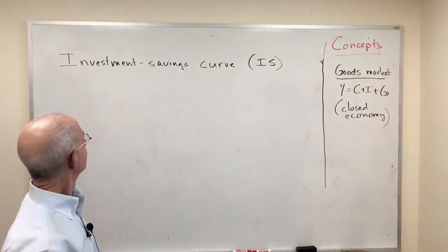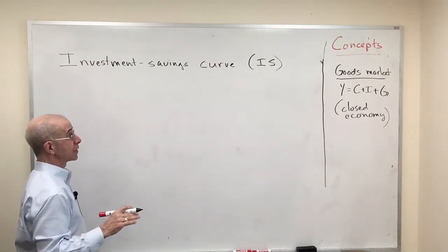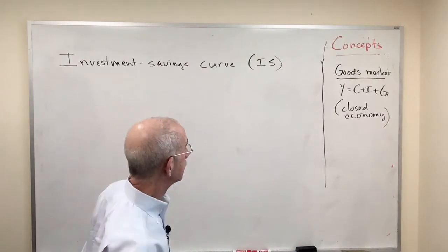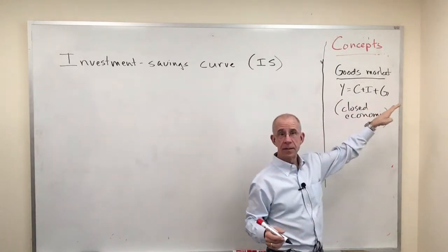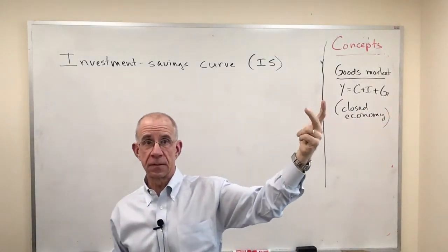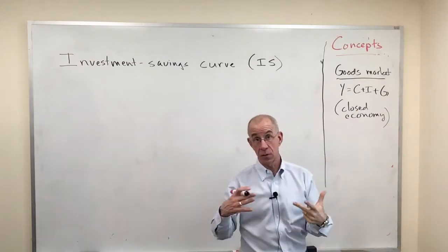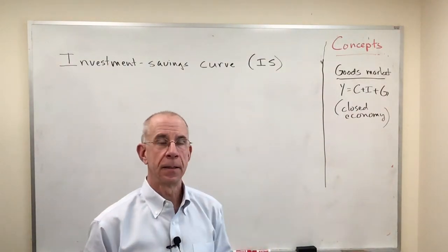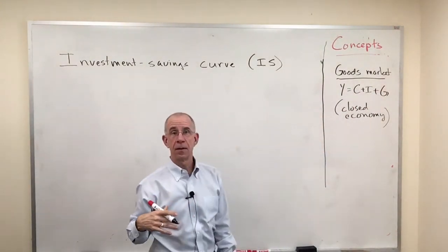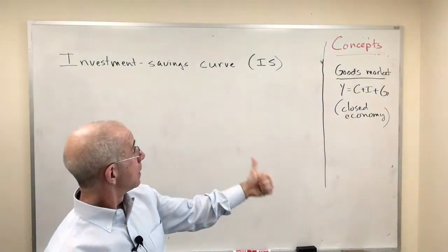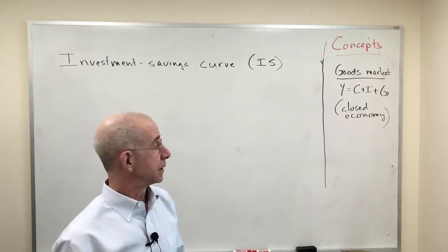Let's talk about this investment-savings relationship and how it relates to goods market equilibrium. The right-hand side is expenditure by consumers, businesses, and the government — I say businesses because investment also includes housing purchased by consumers. This is expenditures on the right-hand side: a measure of the aggregate demand for goods and services. The left-hand side is the supply of goods and services by the economy.